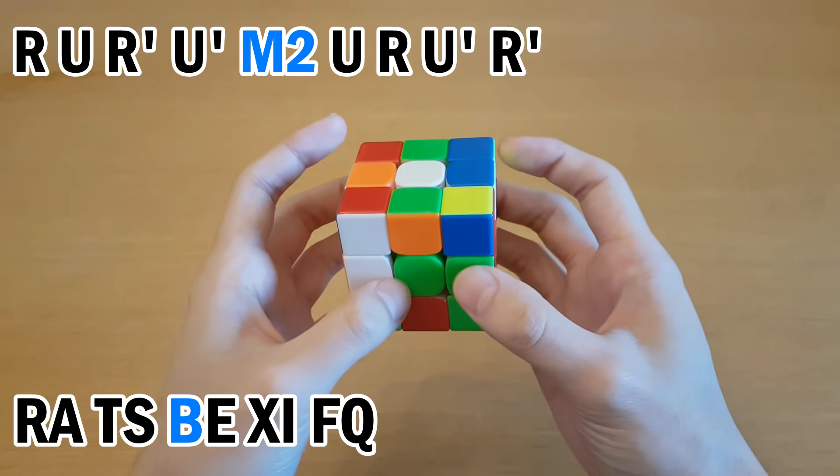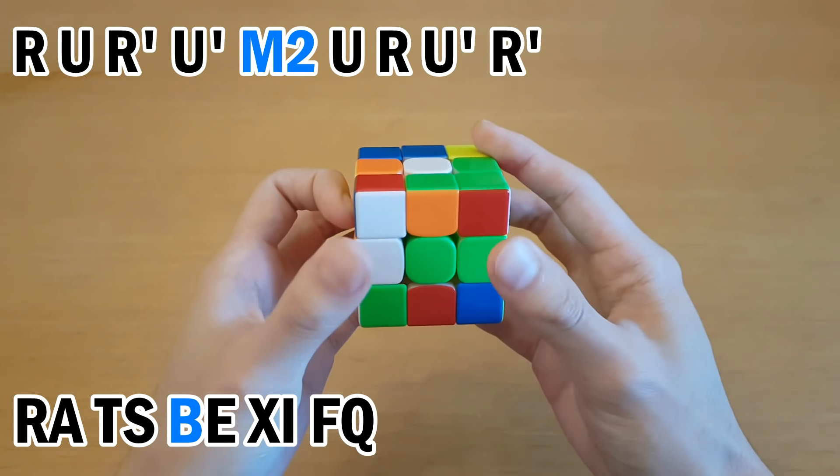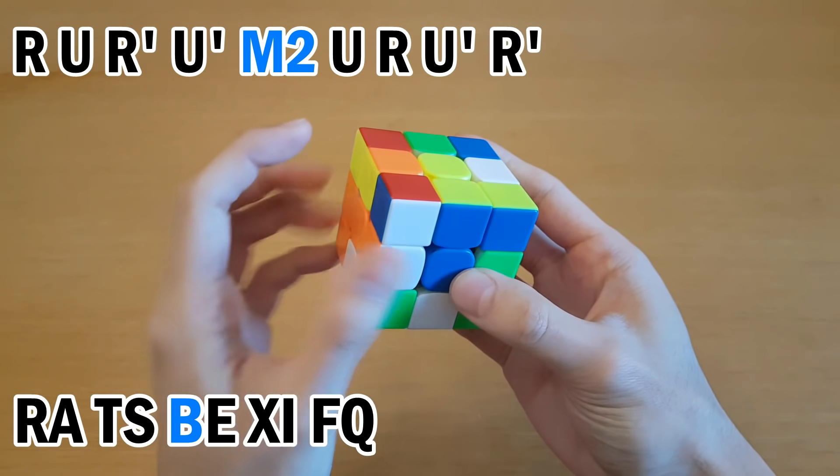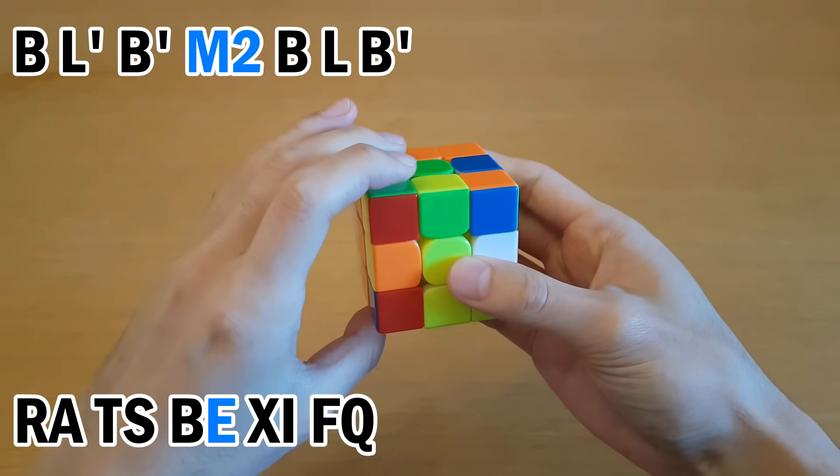All right, next is B. I'm in home grip, I can do either hand for M2. And then E, so re-grip like this.